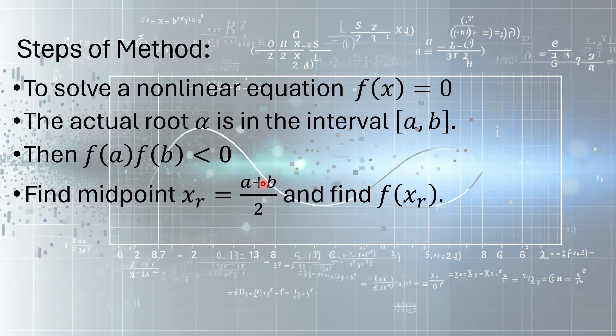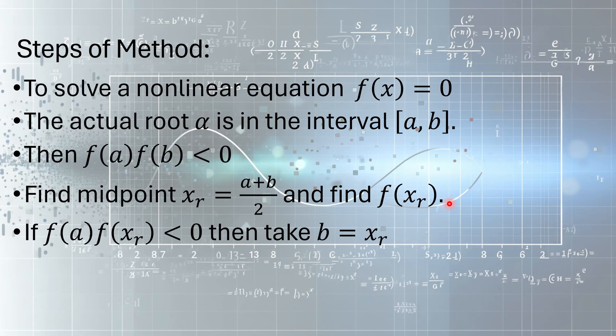The next step is we would find midpoint of the interval, and denote that by xr. How do you find midpoint of an interval? That is simply (a+b)/2. Once you have found xr, you would find the value of this function at this point xr. If this value is 0, it means you are done. The root is already found, and you don't need to repeat the process.